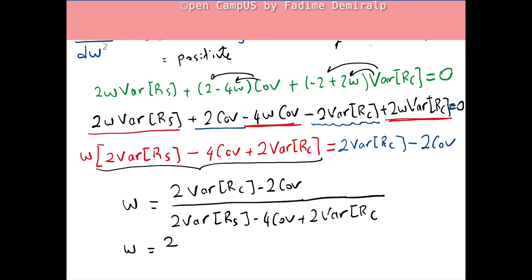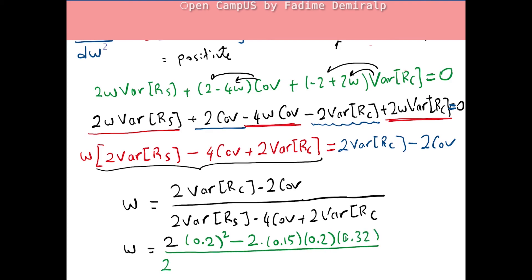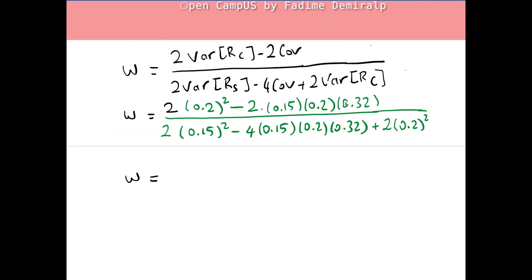Substituting the values — Var(RC) = 0.2², Cov = 0.15×0.2×0.32, Var(RS) = 0.15² — into the formula: W = [2×(0.2²) - 2×(0.15×0.2×0.32)] / [2×(0.15²) - 4×(0.15×0.2×0.32) + 2×(0.2²)]. Computing this gives W ≈ 0.702079, which minimizes both the variance and the standard deviation of R.